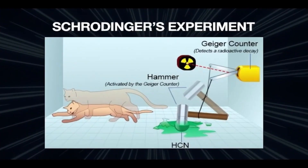Moving on to the experiment that started it all. Dr. Erwin Schrödinger came up with a thought experiment about quantum mechanics. All we need is a radioactive atom, a Geiger counter, a hammer, a glass tube filled with cyanide, and a cat in a steel box. When the atom decays, it releases radiation which sets off the Geiger counter, which triggers the hammer to break the tube and kill the cat.